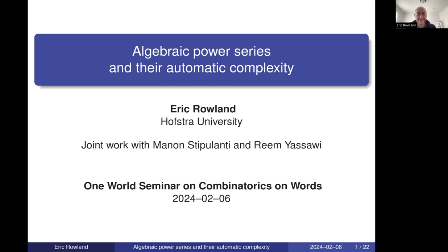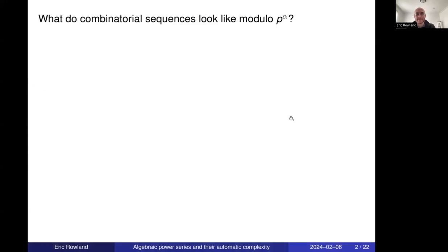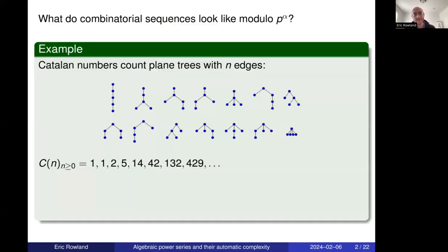Thanks. This is joint work with Manon Stipulanti and Reem Yasawi. The motivation for this whole topic came from papers about 15 years ago that started looking at integer sequences arising in combinatorics — sequences that count various objects — and reducing them modulo primes and prime powers, taking a number-theoretic approach. For example, the Catalan numbers count many objects in combinatorics, such as plane trees with n edges; there are 14 plane trees with four edges, which is the fourth Catalan number.